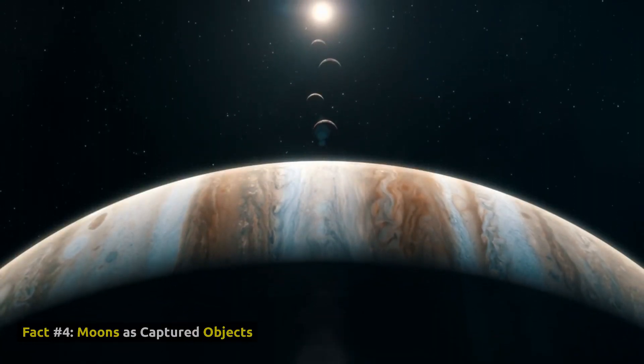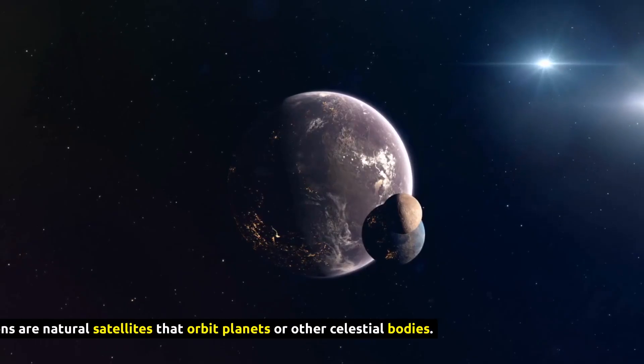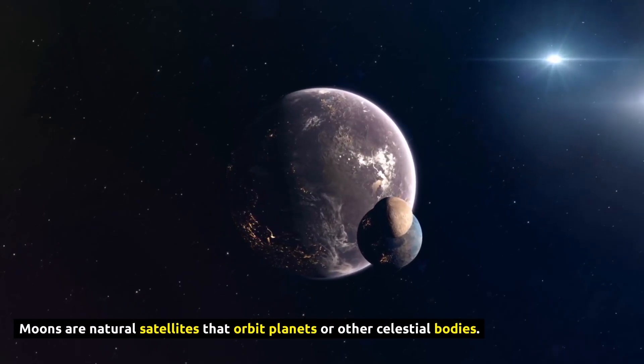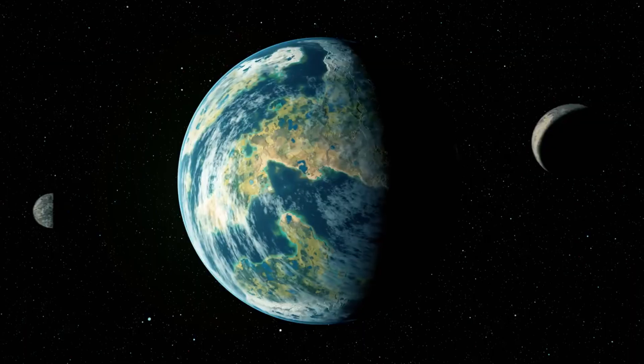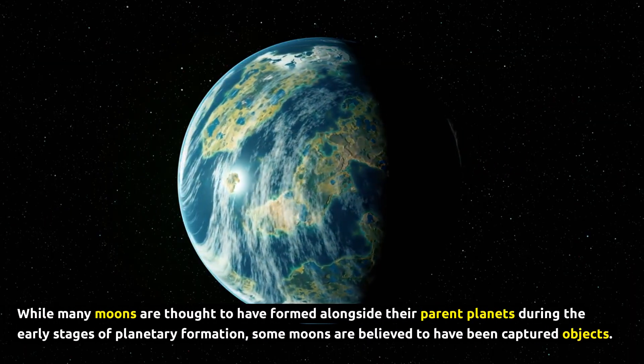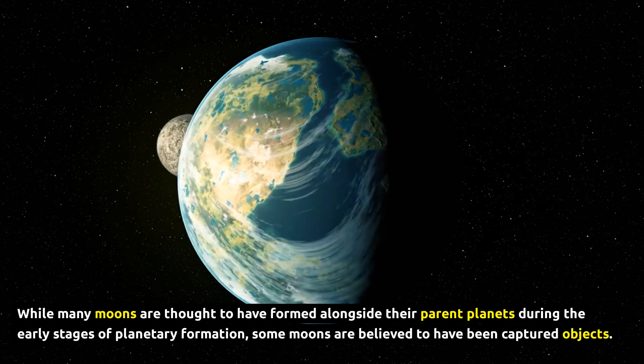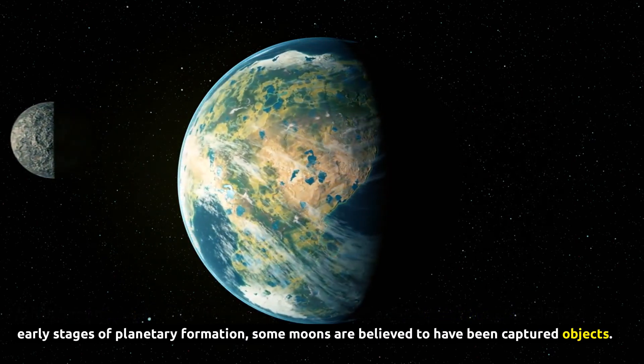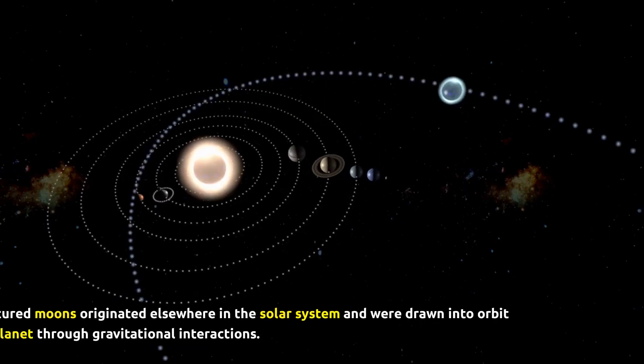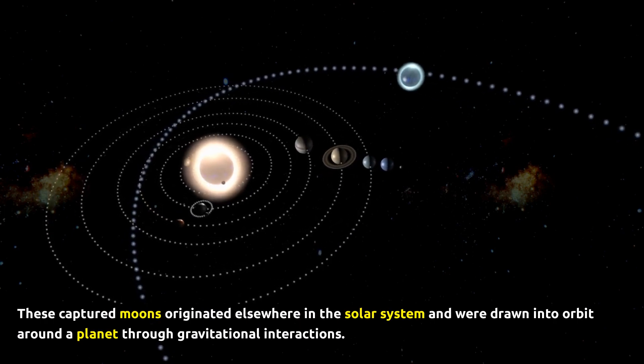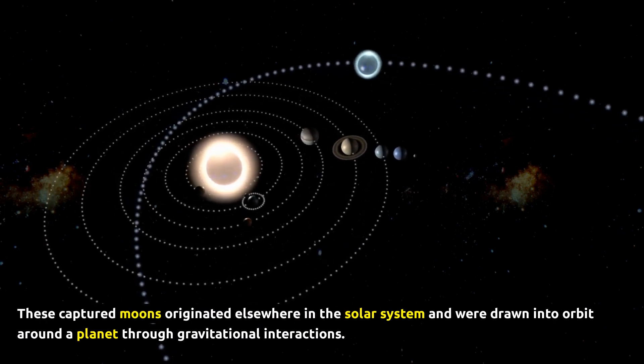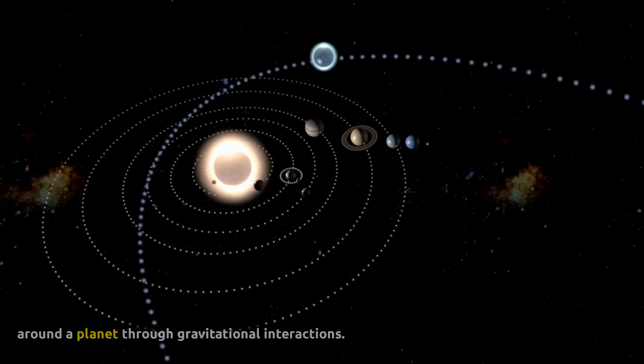Fact Number 4, Moons as Captured Objects. Moons are natural satellites that orbit planets or other celestial bodies. While many moons are thought to have formed alongside their parent planets during the early stages of planetary formation, some moons are believed to have been captured objects. These captured moons originated elsewhere in the solar system and were drawn into orbit around a planet through gravitational interactions.